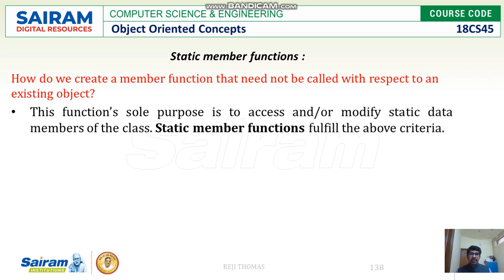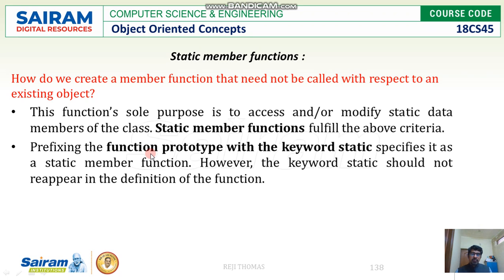So let us see how we can do it. We use a static member function. This can be written in the prototype — it should be prefixed with the keyword static. Don't confuse static members with constant members. Static members are the members which can be accessed without creating an object. We have to prefix the function prototype with the keyword static. If it is member data, the member data should also be prefixed with the keyword static.